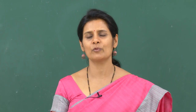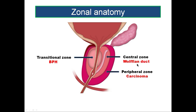Similar to those structures, the central zone of the prostate develops from the Wolffian duct. The central zone is pyramidal in shape with an apex directed towards the verumontanum and has the ejaculatory duct passing through it. There is also the transitional zone, which surrounds the pre-prostatic urethra, forming about 5 percent of the gland, and is prone for benign prostatic hypertrophy.